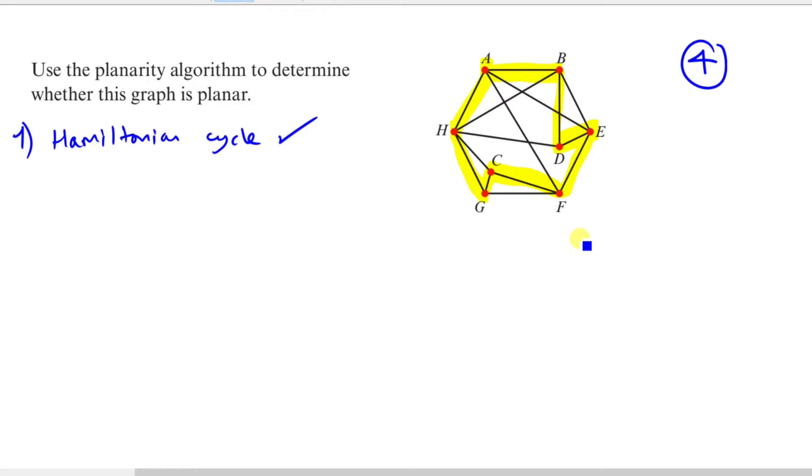Before moving on to step two, it's important to understand what a planar graph is, because the question asks us to use the planarity algorithm to determine whether this graph is planar. Well, a planar graph is simply where you have one edge like AF and it can't be crossed by any other edges.